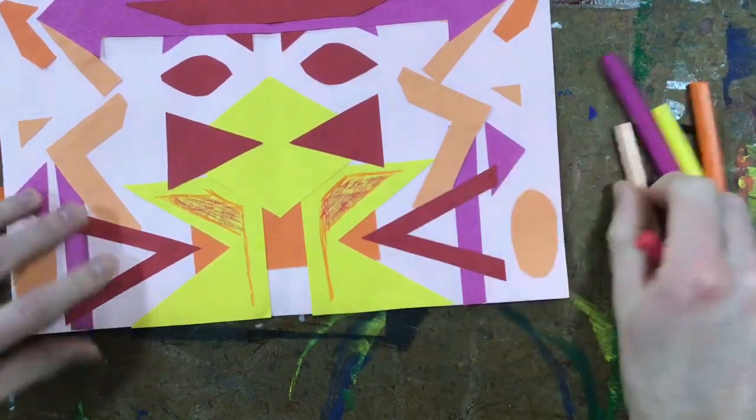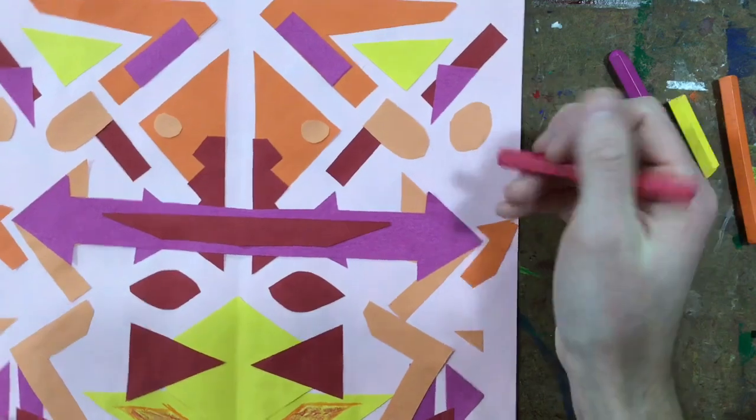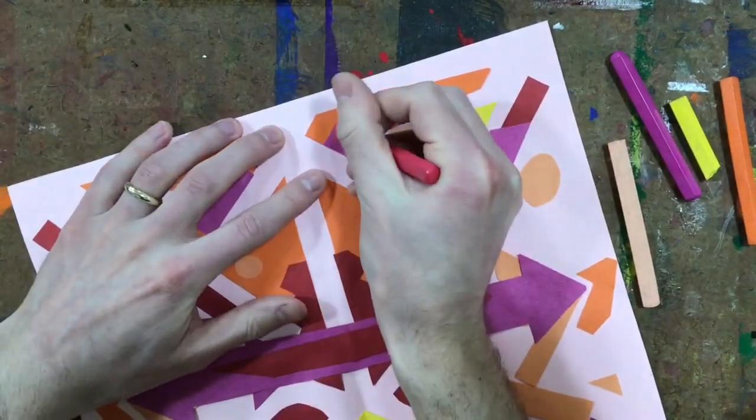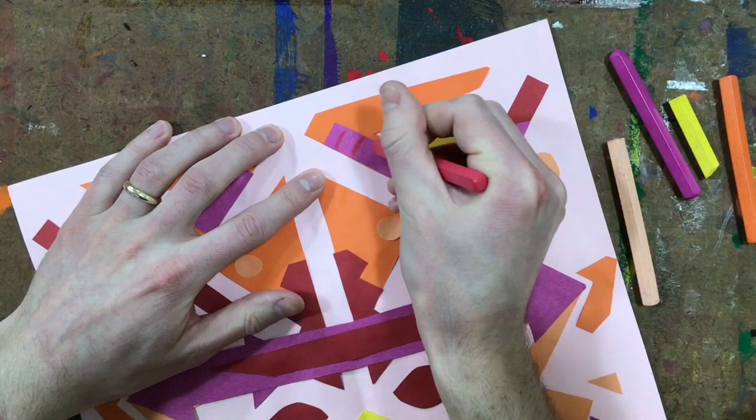I can go in and do some stripes or some polka dots on top of some of these things. You want to do some stripes up here. Press kind of hard so it shows up.